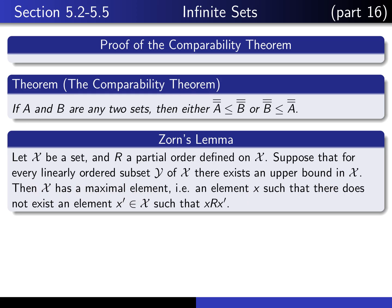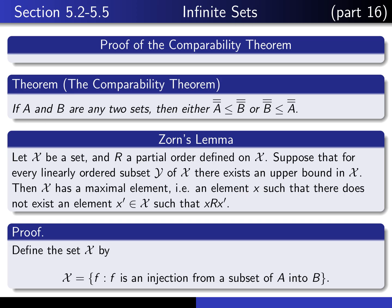A maximal element is an element x with the property that there's nothing in capital X which is bigger than or equal to that little x. So let me start on the proof of the comparability theorem. We want to apply Zorn's Lemma in the right way, so we have to define a certain set X and a certain partial order on that set X.